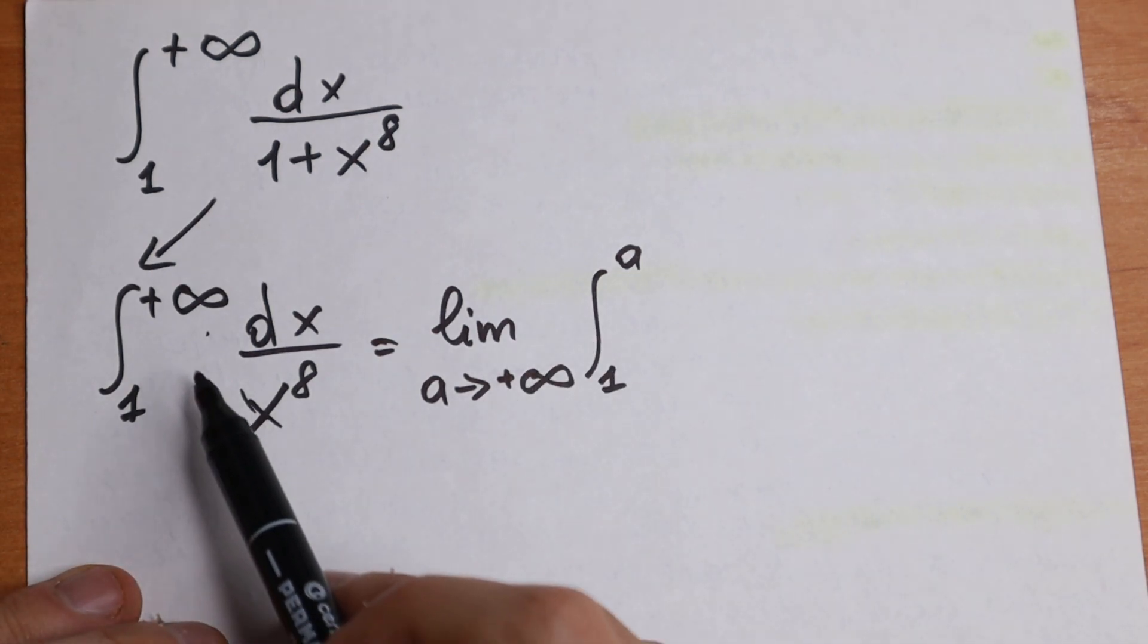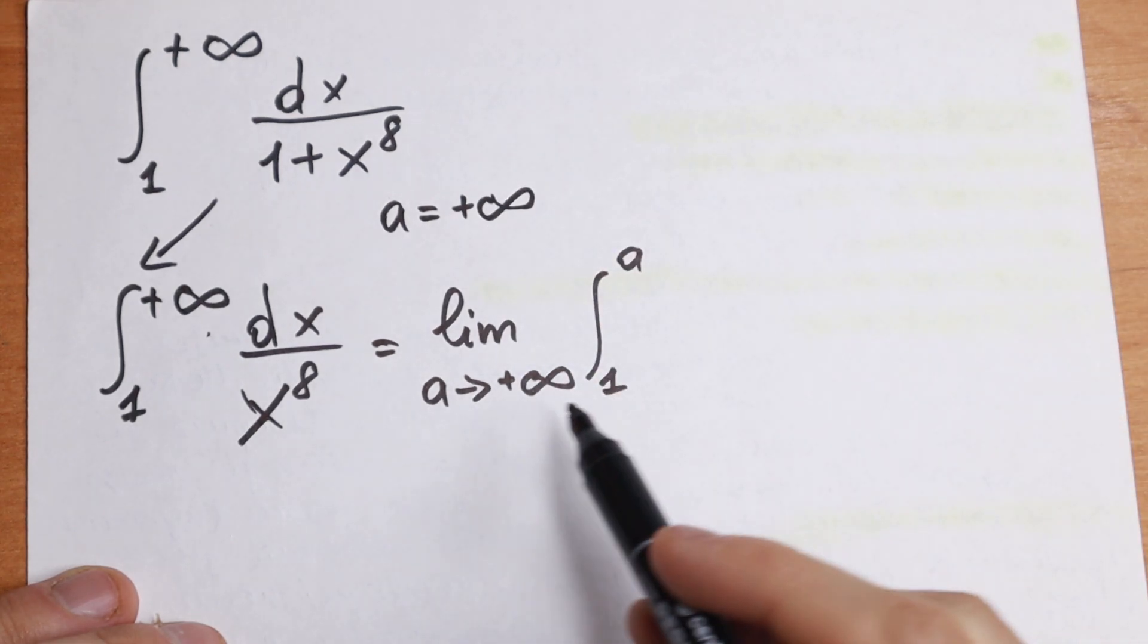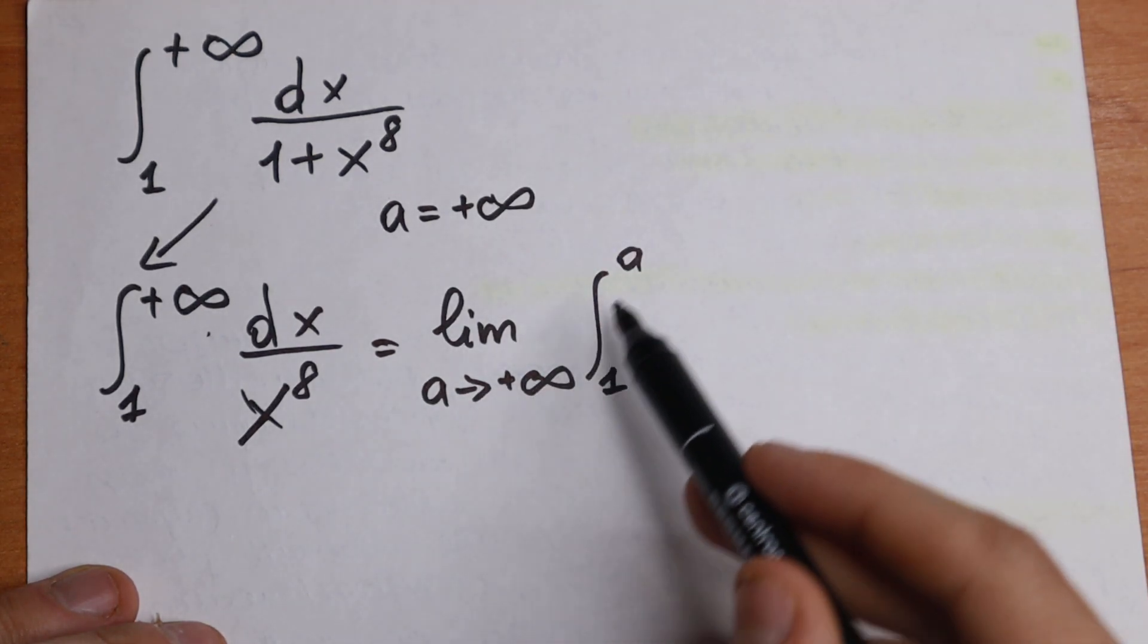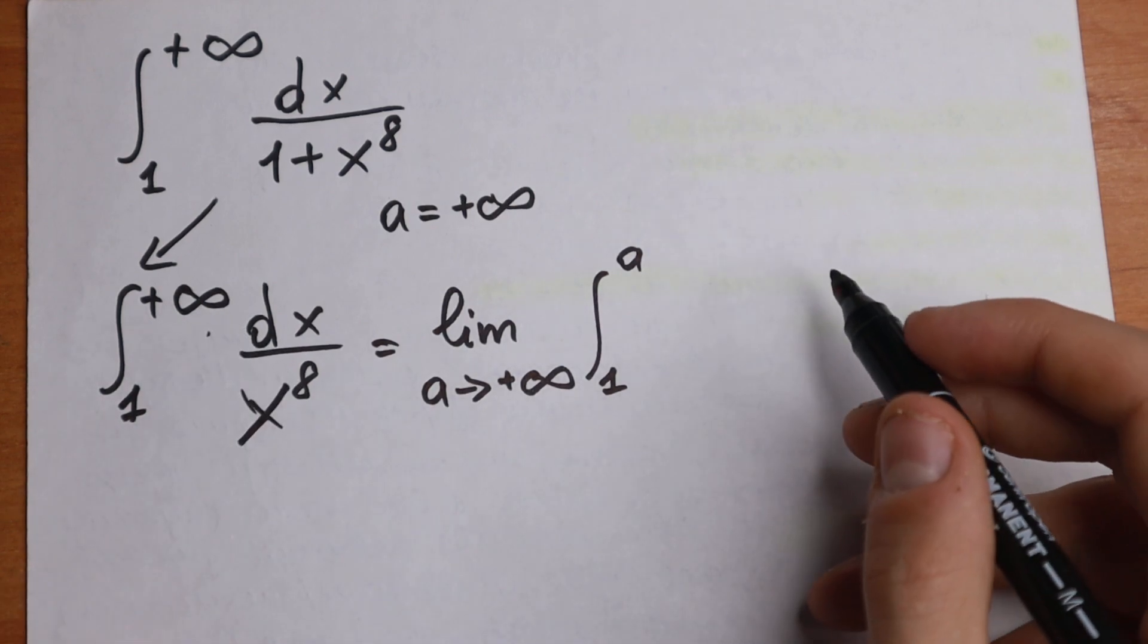So you just put a substitution right here. So a will be over plus infinity, a equals plus infinity. And then a approaches plus infinity but the integral goes to a, not to plus infinity. And our integral looks like that.